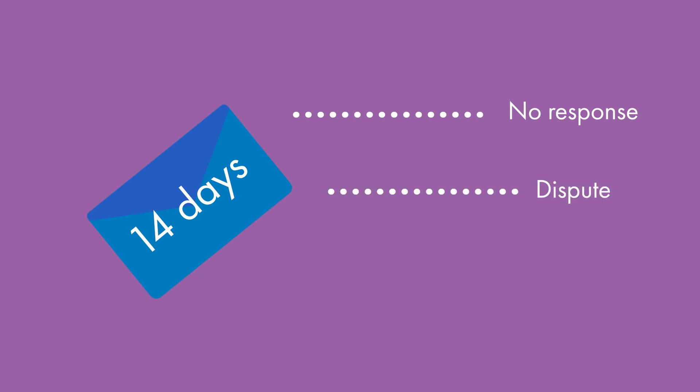If your ex-spouse disputes the divorce, they will have to complete a form to say why they disagree. They must have a genuine legal reason to dispute the divorce — they cannot simply dispute it because they don't want a divorce or to delay the process. If this occurs, you may have to attend court to discuss the case. If your ex-spouse agrees with the divorce, or if they do not want to submit an answer form after they have said they dispute your application, you can continue with the divorce by proceeding to the next stage.